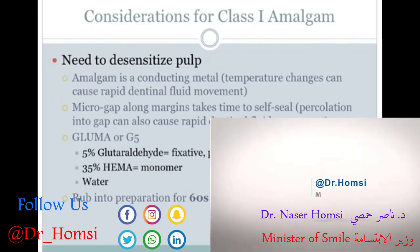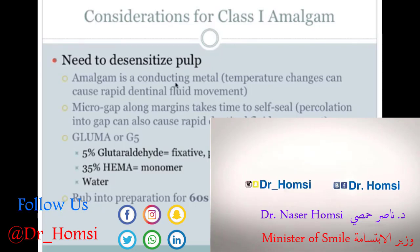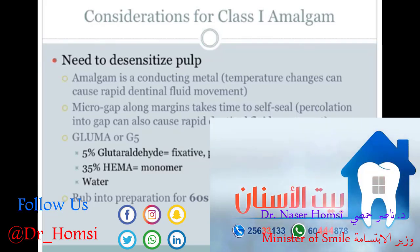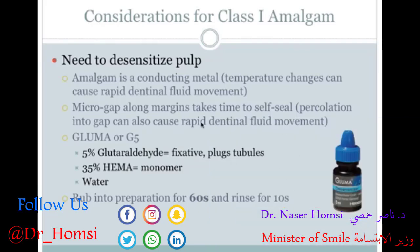Amalgam is a conducting metal and it takes a while to seal, so desensitizing the pulp is essential, especially if the preparation was deep into dentin. One thing you can use is Gluma — rub it into the preparation with a micro brush for about a minute, then rinse it off. This helps to plug up the dentinal tubules to eliminate post-operative sensitivity that the patient can experience.